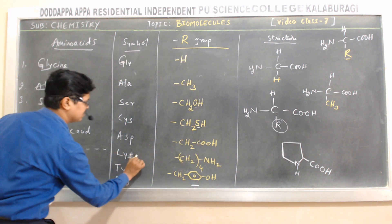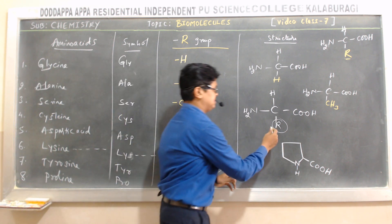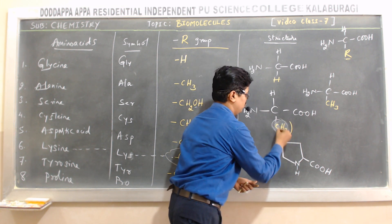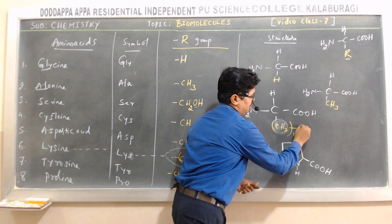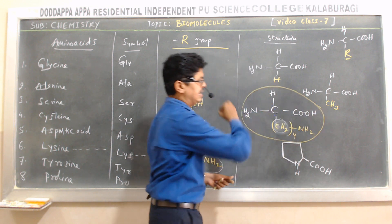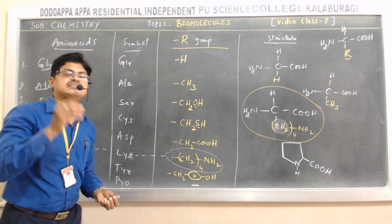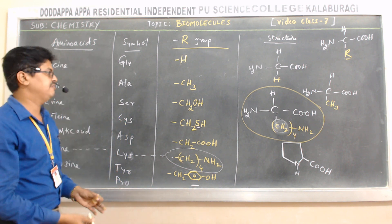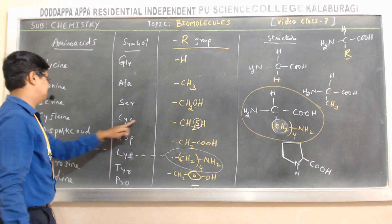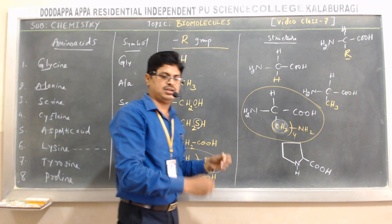To write the structure of lysine, replace R with (CH₂)₄NH₂ in the general formula. In an exam they may ask you to write the structure of a sulfur-containing amino acid — that is cysteine, which contains sulfur in its R-group (CH₂SH). Like that, you can write the structures of various amino acids.